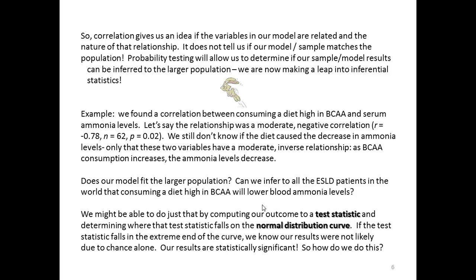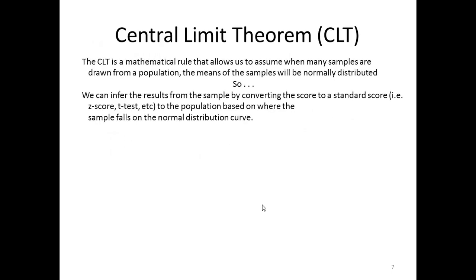How can we do this? We can use the central limit theorem. It's a mathematical rule that allows us to assume when many samples are drawn from a population, the means of those samples will be normally distributed. So we can infer our results from our sample by converting our score to a standard score. It might be a z-score, a t-test, or an f-score. We'll convert that to the population based on where the sample falls on the normal distribution curve.